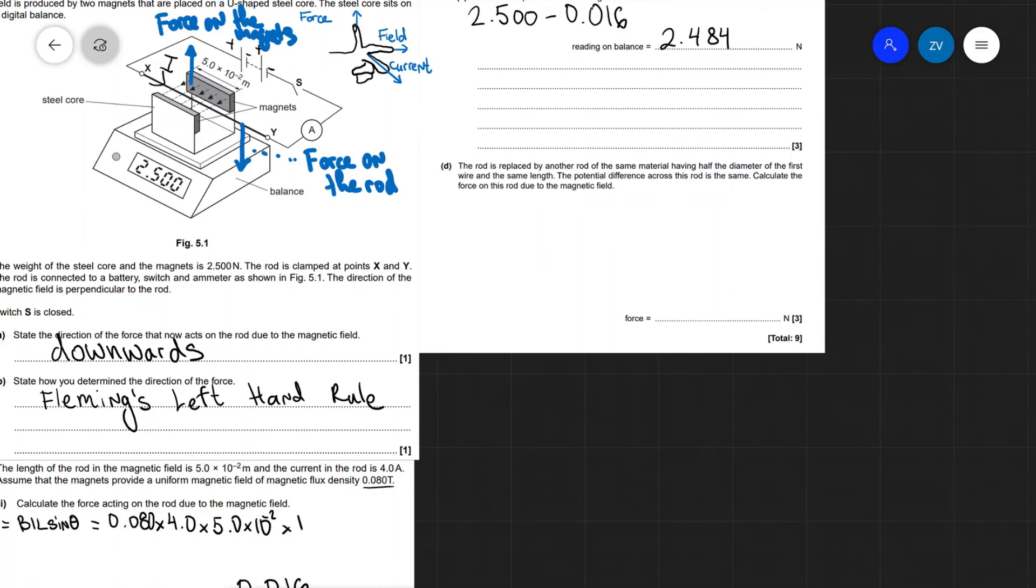And this will mean that there'll be a new reading of 2.484 newtons. We can explain this by saying that the force on the magnets is upwards due to Newton's third law.